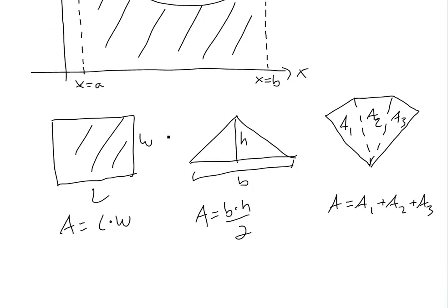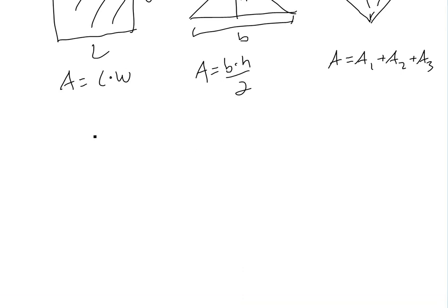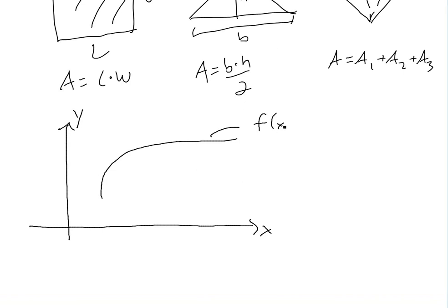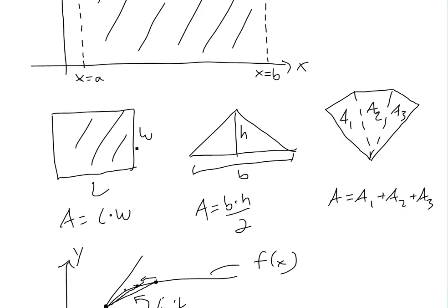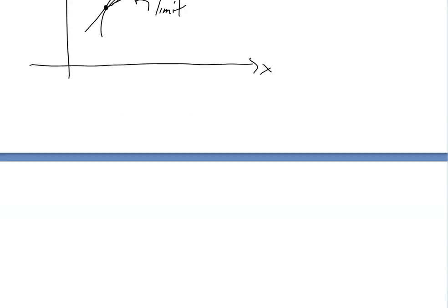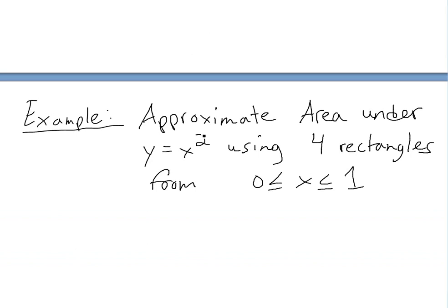Another idea we'll use is how we derived the derivative of a tangent line. If you had a function f of x and wanted the tangent line at a point, we looked at a secant line between two points, and as you move closer and closer, you get the tangent line — that's taking a limit. We're going to do a similar method here, summing up rectangles. To illustrate: approximate the area under y equals x squared using four rectangles from 0 to 1.